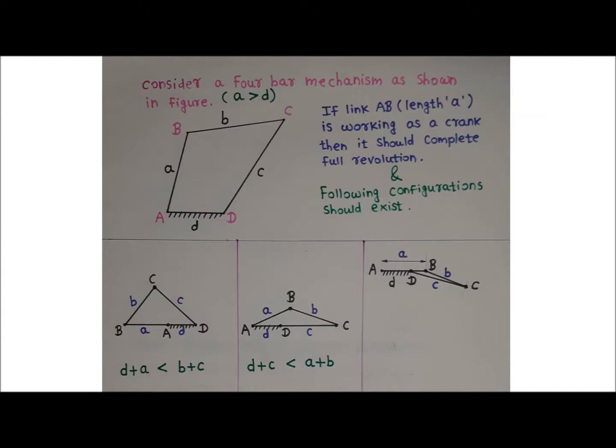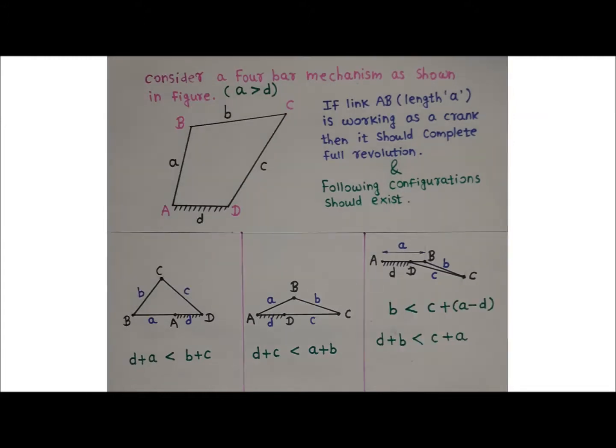The third configuration exists when input link AB is aligned and overlapped with fixed link AD. The condition for this is: b < c + a − d, which can be rearranged to d + b < c + a.